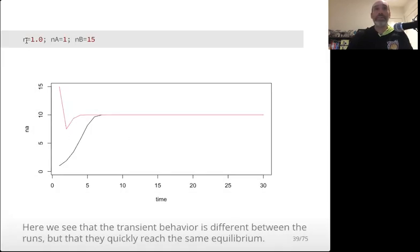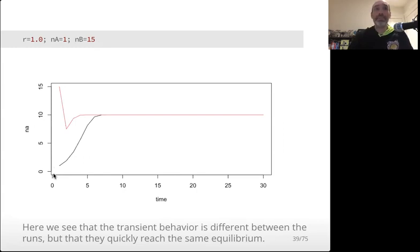I'm setting little r equal to 1 and running two scenarios, a and b. In run a, the initial condition is 1, and in run b, the initial condition is 15 — one very low and below the carrying capacity, one decently above the carrying capacity. We can see that in both cases they converge, after a relatively short amount of time, to the same value k.